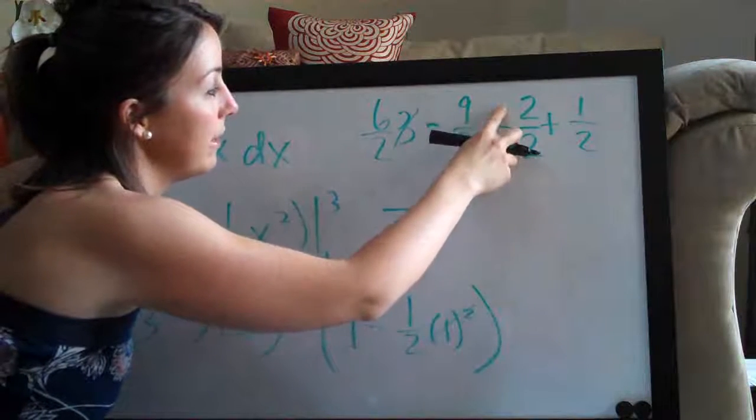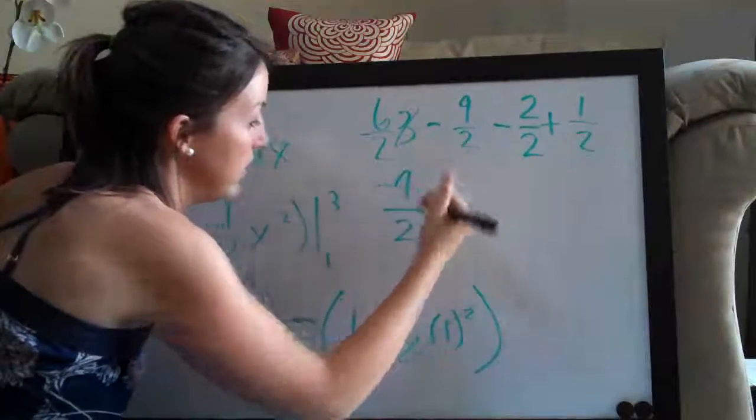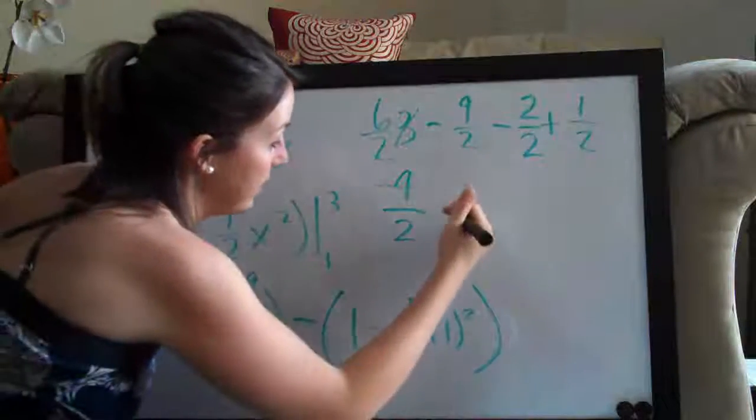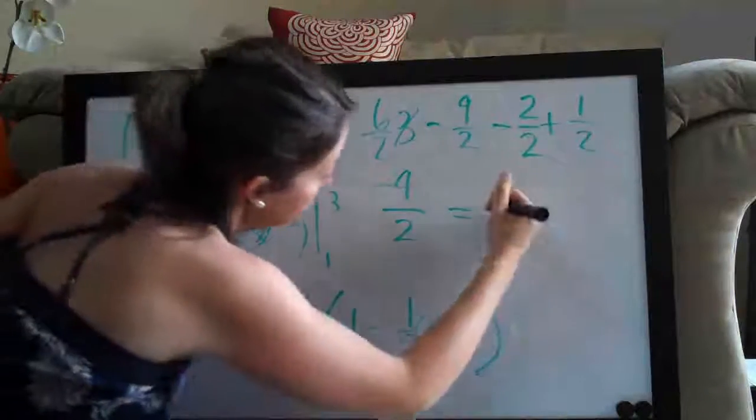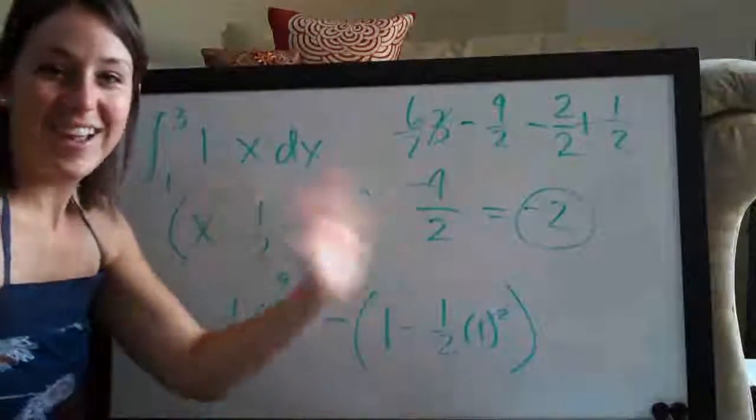negative 3 minus 2 is negative 5 plus 1 is negative 4. So negative 4 halves, and we can simplify that to negative 2, which is our final answer. Thanks guys. See you next time.